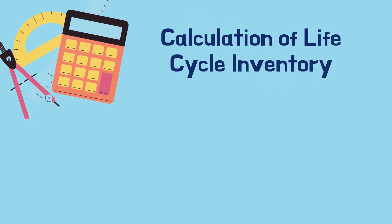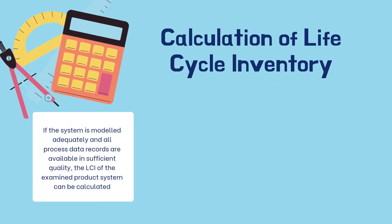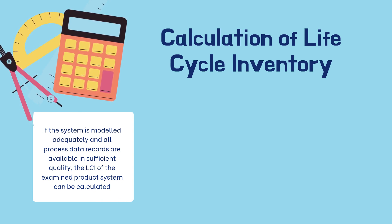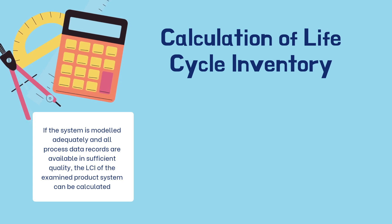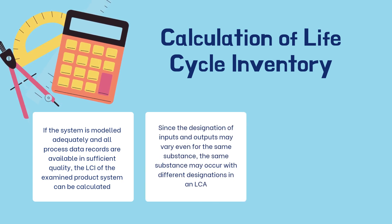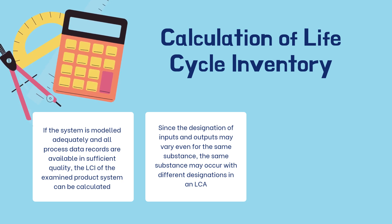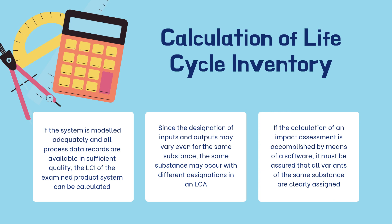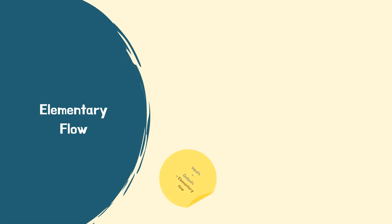For the calculation of the life cycle inventory: if the system is modeled adequately and all process data records are available in sufficient quality, the LCI of the examined product system can be calculated. Since the designation of inputs and outputs may vary even for the same substance, the same substance may occur with different designations in an LCA. Moreover, if the calculation of an impact assessment is accomplished by means of software, it must be assured that all variants of the same substance are clearly assigned.